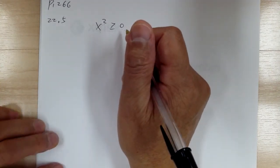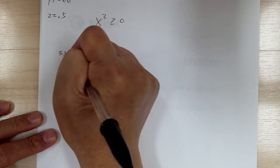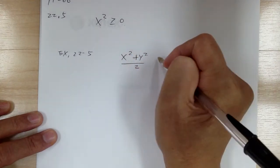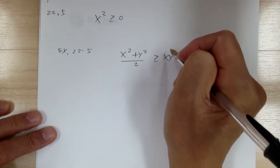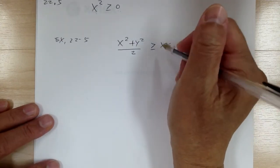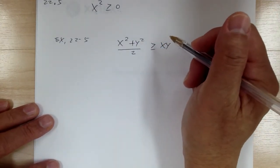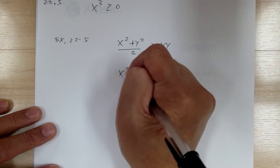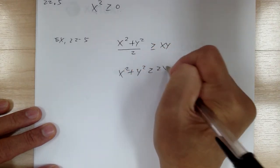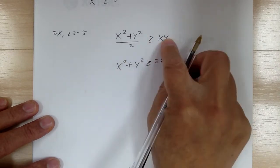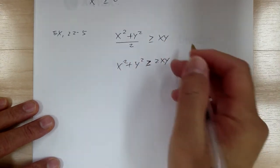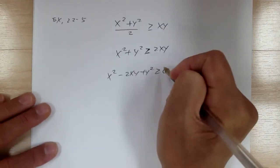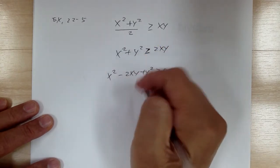Example 22-5 shows that (x squared plus y squared) over 2 is greater than or equal to xy, and you want to find a solution for x and y. What you can do is multiply both sides by 2 — multiplying by a positive number doesn't change the inequality — then rearrange everything to one side to get x squared minus 2xy plus y squared is greater than or equal to 0.